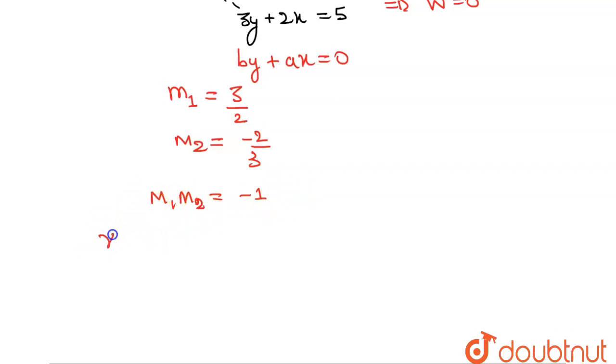So what we see from here is that the equation 3y plus 2x equals 5 is perpendicular, and for it Del V equals 0. This simply means work done equals 0. This will be our answer.